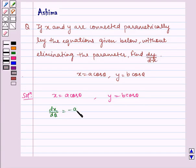is equal to minus a sin θ, and dy/dθ is equal to minus b sin θ. So therefore, by chain rule,